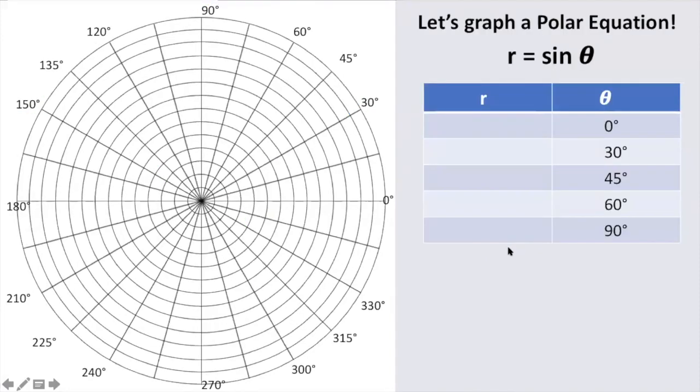Now we're going to look at actually graphing a polar equation. It's in the form of r, which is again, that radius or distance equals something theta, or the angle.